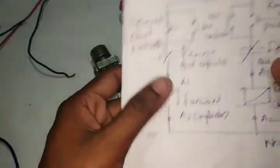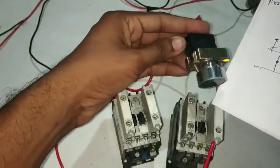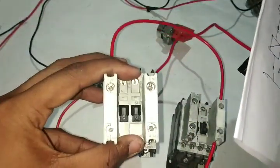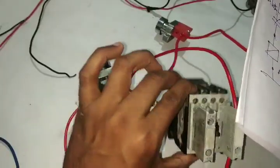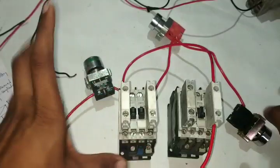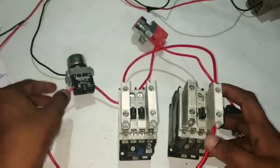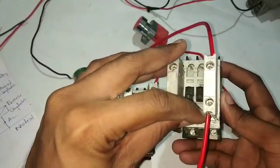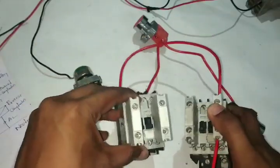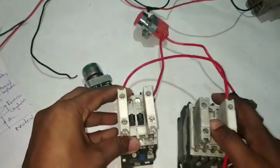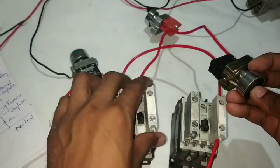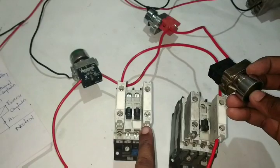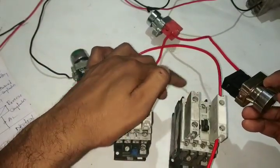This is A1. Now we have to go — reverse NO push button, reverse NO push button, other end forward. NC auxiliary contactor, other end reverse contactor A1. Same as first, we have to go NO push button. Reverse contactor is NC, reverse contactor is NC. Other end, forward contactor is A1.